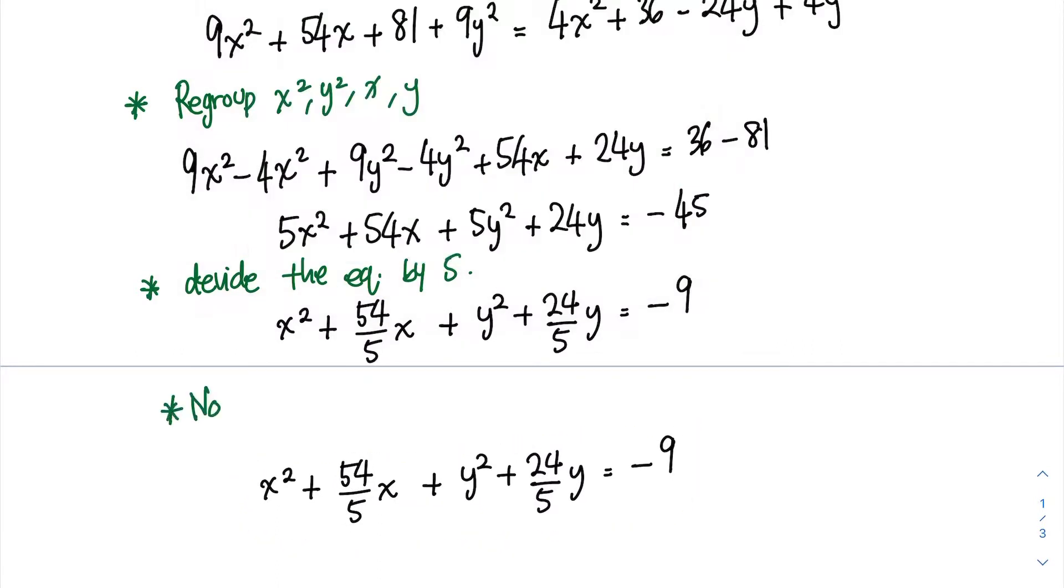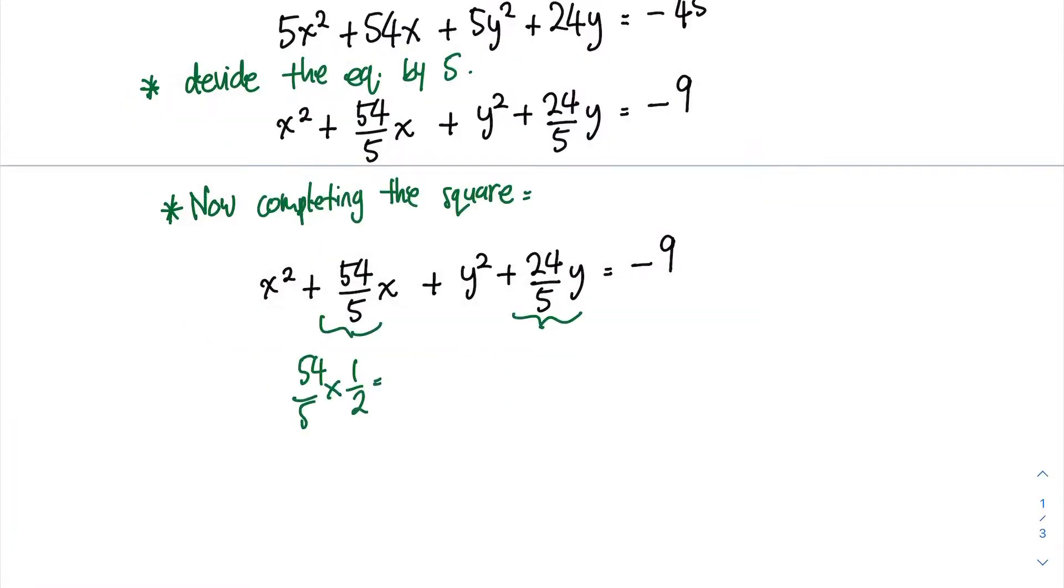To complete the square, you have to identify what are your x and y variables, and then you multiply by half and square them. After that, simplify the fraction into the simplest form.